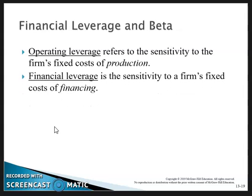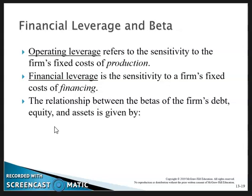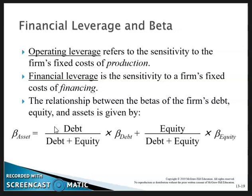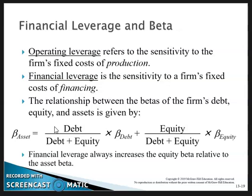Financial leverage is a sensitivity to a firm's fixed cost of financing. The relationship between the betas of a firm's debt, equity, and assets can be given by: beta asset equals the weight in debt (debt divided by debt plus equity) multiplied by the beta for debt, plus the weight in equity (equity divided by debt plus equity) multiplied by the beta for equity. Financial leverage always increases the equity beta relative to the asset beta.